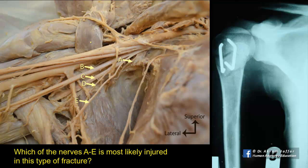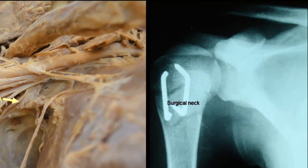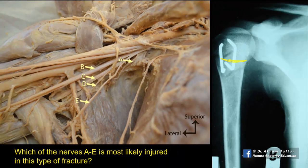Which nerves A to E is most likely injured in this type of fracture? It is clear from the radiograph that there is a fracture at the surgical neck of the humerus. The surgical neck connects the proximal end of the humerus with the shaft, and the axillary nerve lies in close proximity to the surgical neck and might be injured in such a fracture.